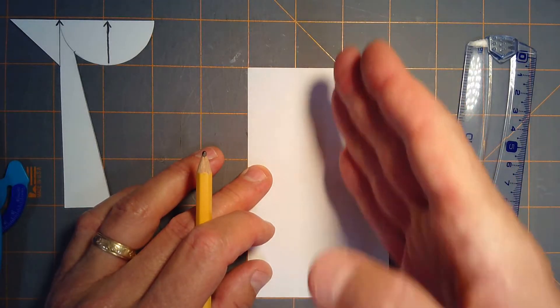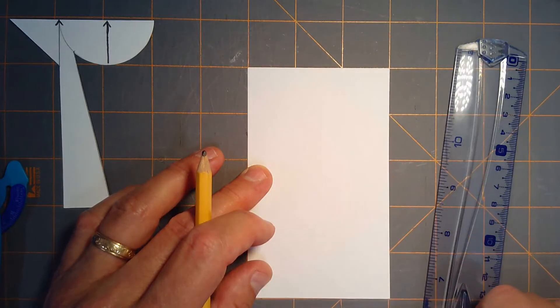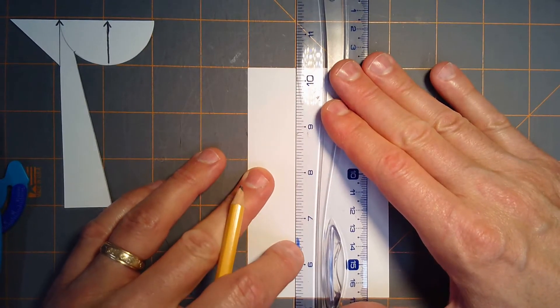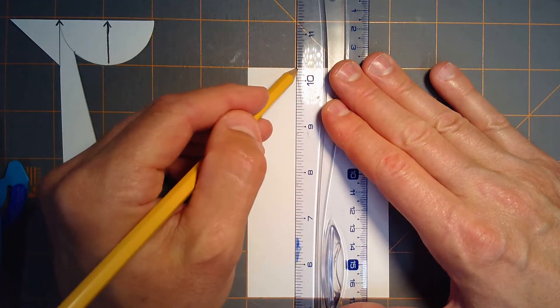The first job is to divide the index card into three one-inch columns. I'm just going to use my cutting mat here to do that easily for me.